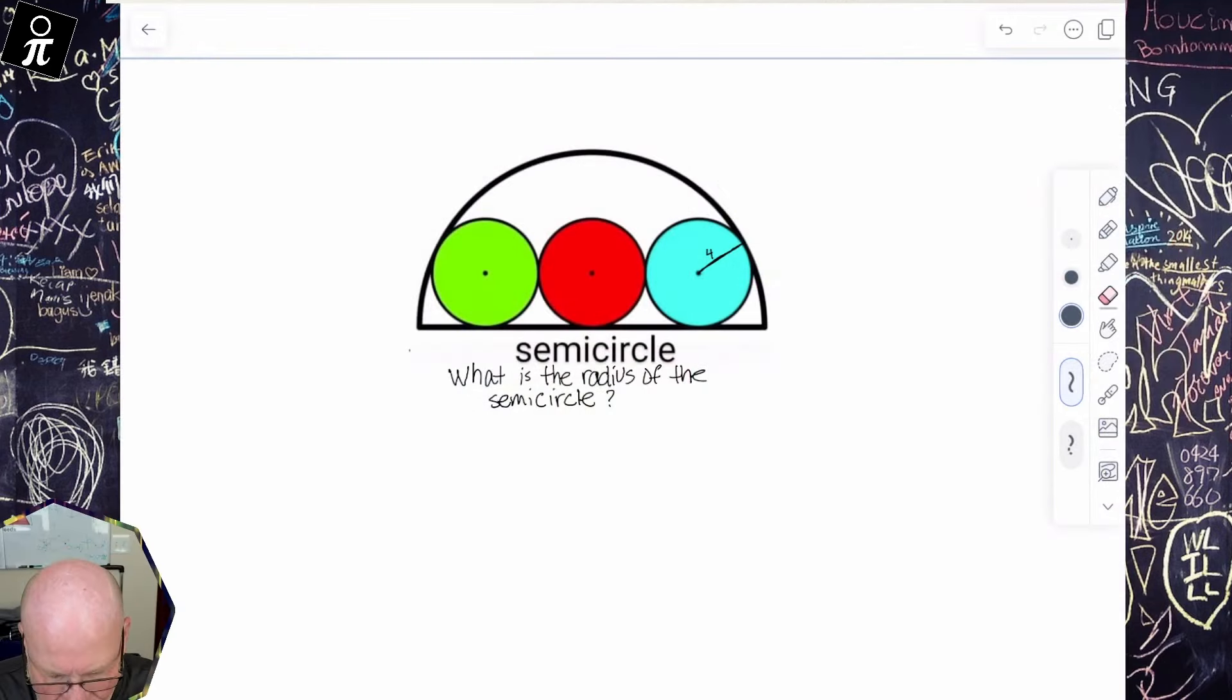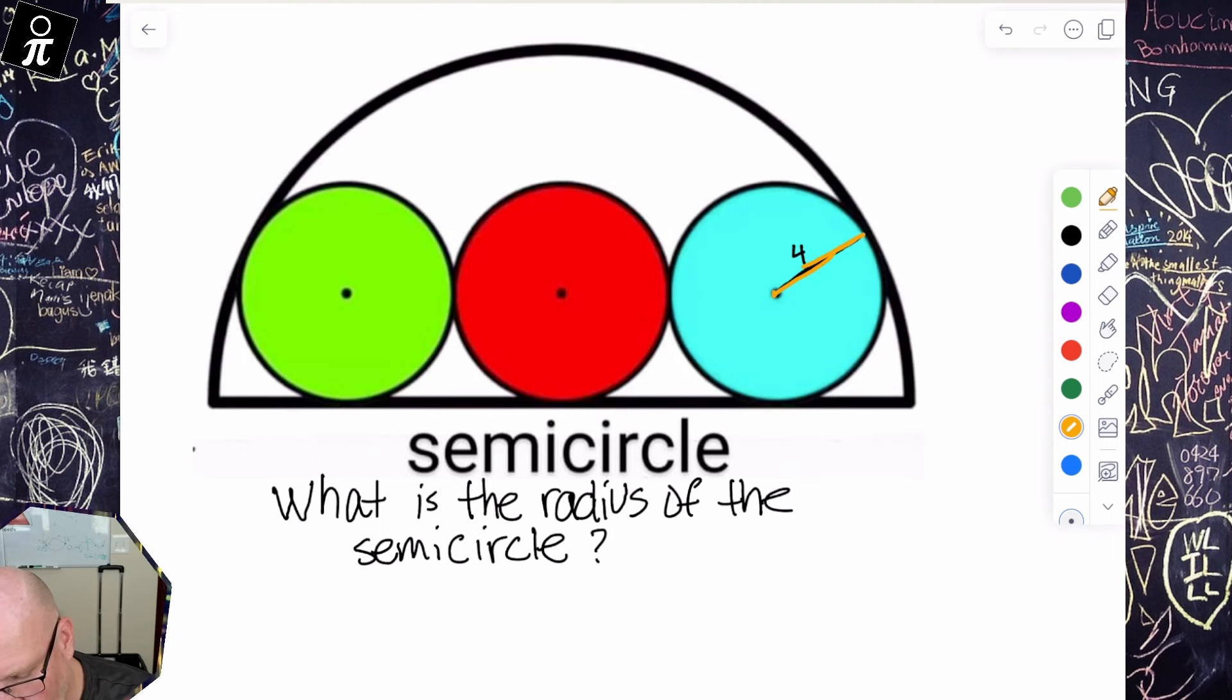And so as I zoom in here, I'm going to use orange. So I see that this radius right here is four. They're all four.